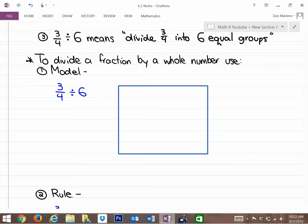This is just one example; you could use others. 3/4 divided by 6 means divide 3/4 into 6 equal groups.